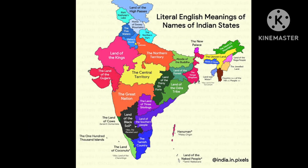This is the literal English meaning of the names of Indian states. Madhya Pradesh means 'central territory' — Madhya means central. Uttar Pradesh means 'northern territory.' Chhattisgarh means '36 forts' — Chattis means 36 and garh means fort. Rajasthan means 'land of the kings.' The northern Himalayan states — Ladakh, Jammu and Kashmir, Himachal Pradesh, and Arunachal Pradesh — are all related to the Himalayas.